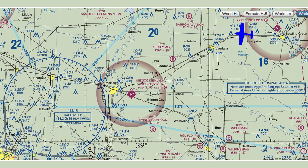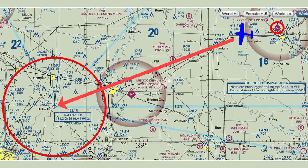We are going to take that knowledge and use it to our advantage to go directly to a VOR. In this example, we have departed the Bowling Green Airport and are flying around the area and decide we want to head directly to the Hallsville VOR at frequency 114.2.